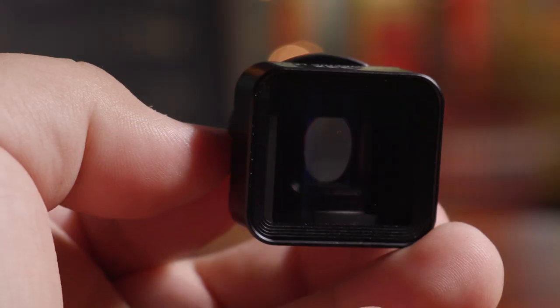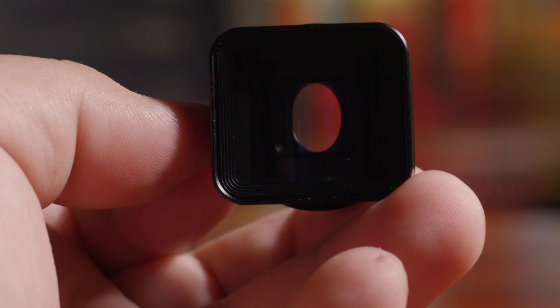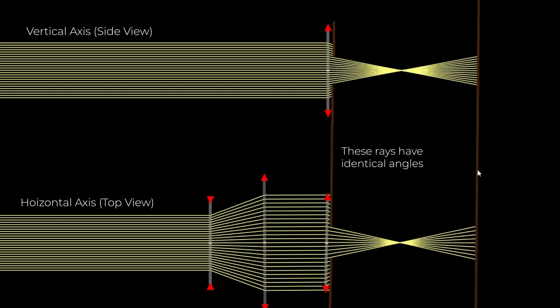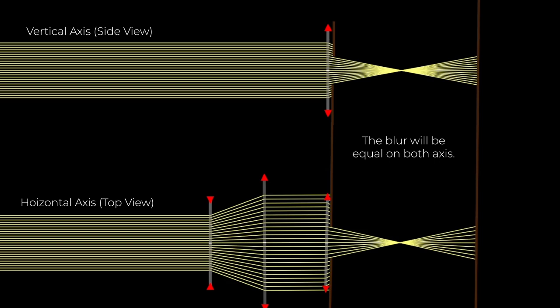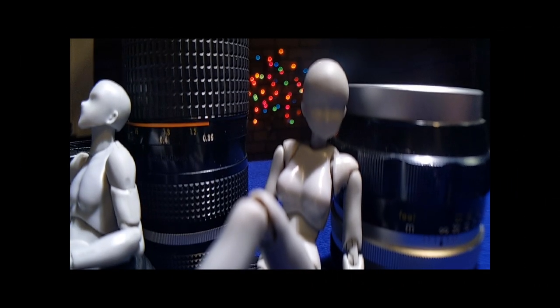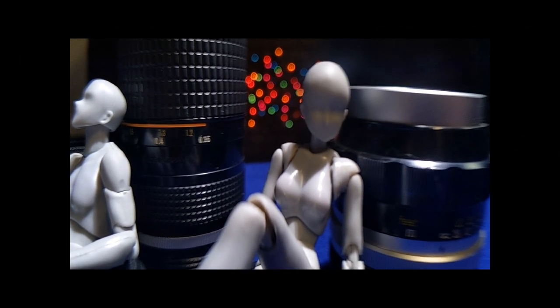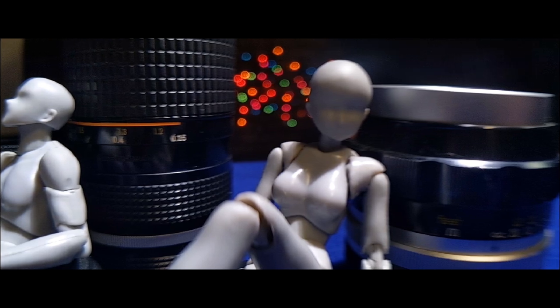That's pretty much the idea behind cell phone anamorphic lenses. But here's the kicker — look at the angle of the rays after they leave the second lens: they're identical. So as we move the sensor back from the focus plane at infinity to focus on something closer, we're going to get a blur that is equal on both the horizontal and the vertical axis. No matter where we move our focus plane, the bokeh from infinity will always be round. And when we unsqueeze a round bokeh we get horizontal ovals.